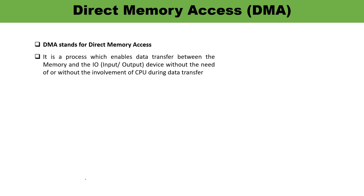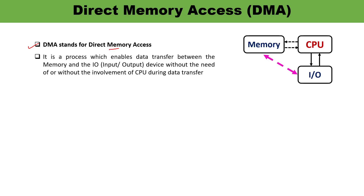DMA stands for direct memory access. From the name itself, it is clear that it is actually a process which enables data transfer between the IO devices and memory without any involvement of the CPU. There is no intervention of CPU when there is a direct data transfer between the IO and the memory — that is why it is known as direct memory access.